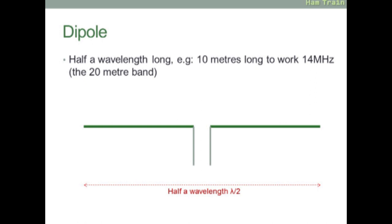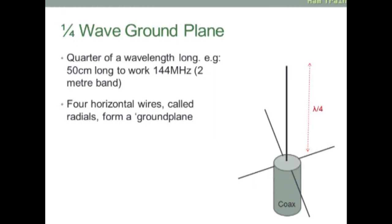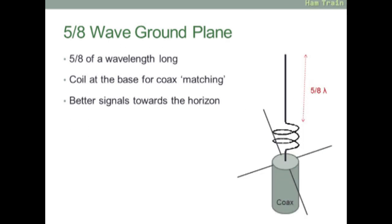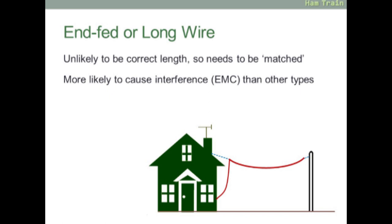A look now at the different types of antennas. One of the most common in the exam is the dipole. This is a balanced antenna with two equal halves, half a wavelength long. So for the 20 meter band, the antenna will be 10 meters long. Next, the quarter wave ground plane. This is a vertical antenna that's a quarter of the wavelength long. For the two meter band, it will be 50 centimeters long. Next, the five-eighths wave ground plane, five eighths of a wavelength long. It will typically have a coil at the base for matching. These are typically used on a car where you want your signal pushed out to the horizon. Next, the end fed or long wire antenna. These are unlikely to be of the correct length, so the antenna will need to be matched using an AMU, antenna matching unit. The end fed or long wire is more likely to cause interference, EMC, than other types of antenna.